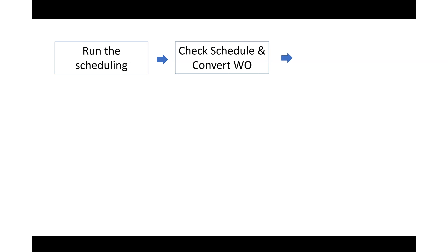Let's see the flow for how we're going to do that. First, we're going to run a schedule for an asset — we have already created the asset, which was demonstrated in a previous video. After we run the schedule, we'll generate the maintenance schedule, then convert it to a work order. Once the work order is created, it will be estimated, showing the cost, hours, and items needed.